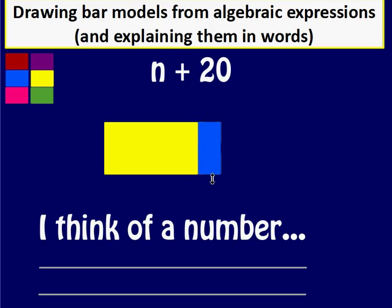It needs to be just a tiny bit longer. Right, now I need to annotate it. So this bit is the n and this bit is the 20. Simple. That's done.